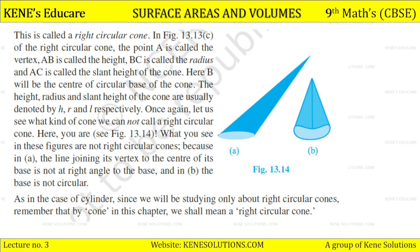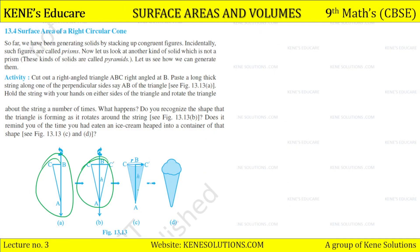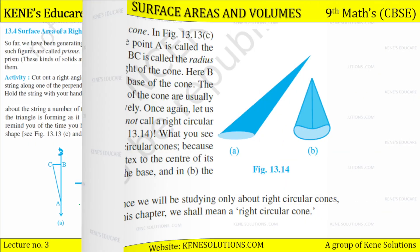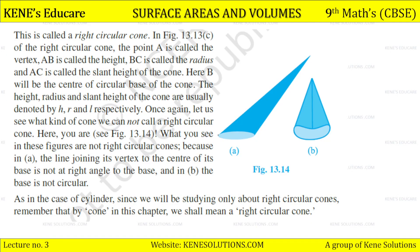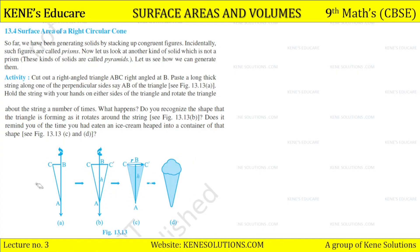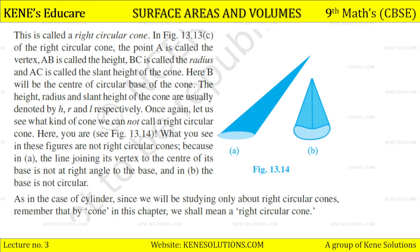The point A is called the vertex of the right circular cone. BC is called the radius and AC is called the slant height of the cone. AC here we call the slant height, and AB we call the cone height. B will be the center of the circular base of the cone. The height, radius, and slant height of the cone are usually denoted by H, R, and L respectively.